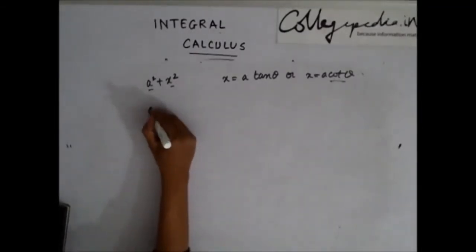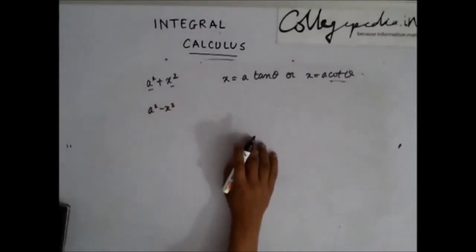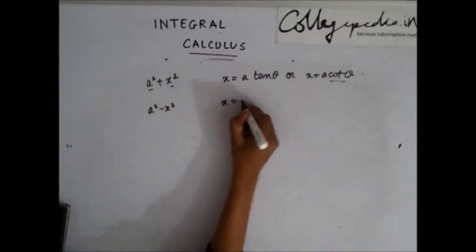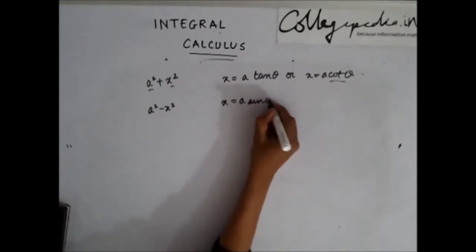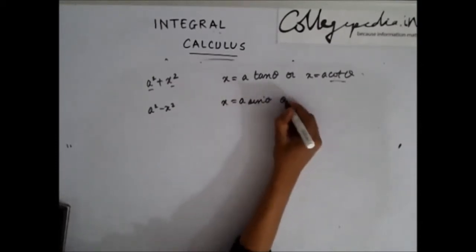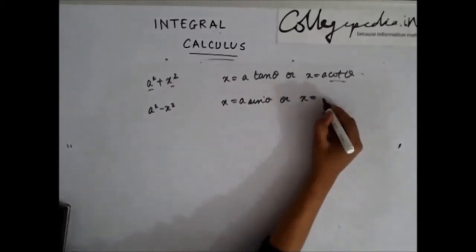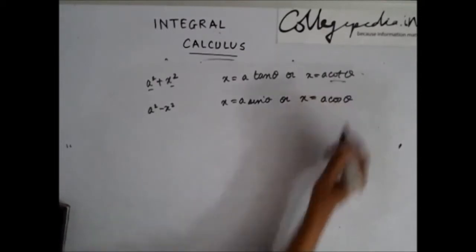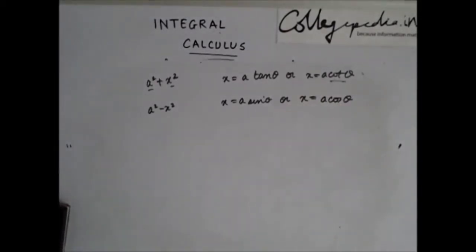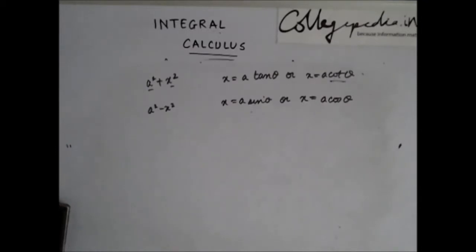Similarly, if you have a² - x², a good substitution is x = a sinθ or x = a cosθ. If you put a sinθ, you get a²(1 - sin²θ), which is a² cos²θ. If you put a cosθ, you get a²(1 - cos²θ), which is a² sin²θ.